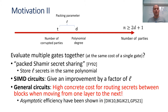However, when working over general circuits, previous works could only achieve asymptotic efficiency, but with high concrete cost for routing secrets between blocks when moving from one layer of the circuit to the next. So the question remains open: what can we gain in terms of concrete efficiency from working in the strong honest majority setting when evaluating general circuits?